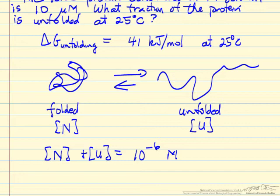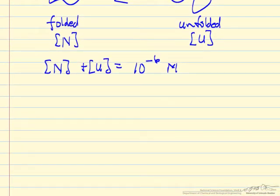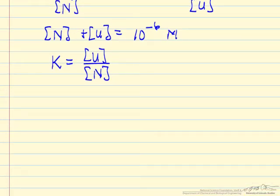This is the equilibrium process. We are given delta G, which means we can calculate the equilibrium constant. The equilibrium constant equals the concentration of the unfolded product over the folded. We can use concentrations here, treating this as ideal since these are low concentrations.